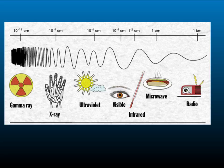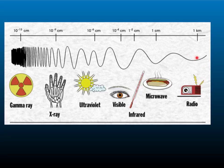You have learnt before about the electromagnetic spectrum. It's made up of a range of different types of electromagnetic waves, ranging from gamma rays at the short wavelength high energy end to radio waves at the long wavelength low energy range. Unlike other waves, electromagnetic waves do not need a medium like air or water to travel through and they can travel through a vacuum like space.